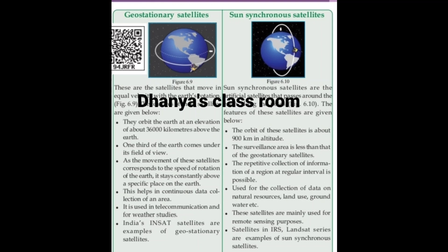Sun-synchronous satellites are mainly used for remote sensing purposes. Satellites in the IRS and Landsat series are examples of sun-synchronous satellites.